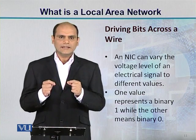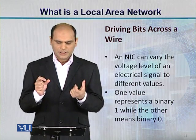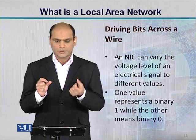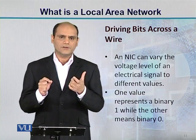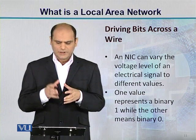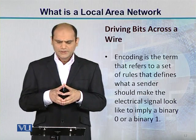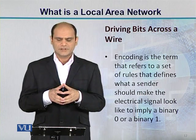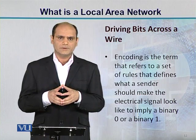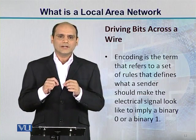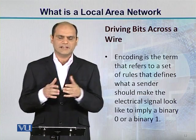What can we do with a NIC? The two NICs are connected via a cable. The electrical signal's voltage level can vary to different values, so that different values can represent a binary 1 or a binary 0. One value represents a binary 1 while the other means a binary 0. This is what we call encoding — a term that refers to a set of rules defining what a sender should make the electrical signal look like to imply a binary 0 or binary 1.